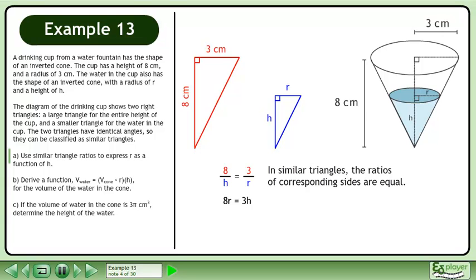Cross multiply to get 8r equals 3h. Divide both sides by 8 to get r equals 3h over 8. We can rewrite this as the function r equals 3h over 8.